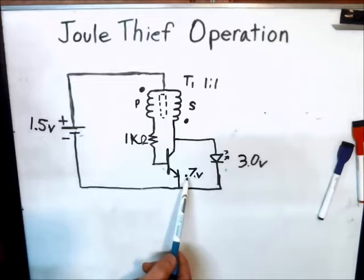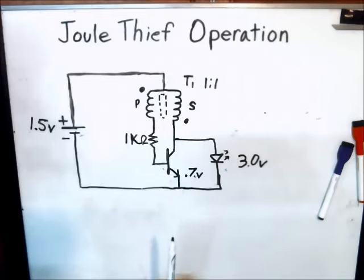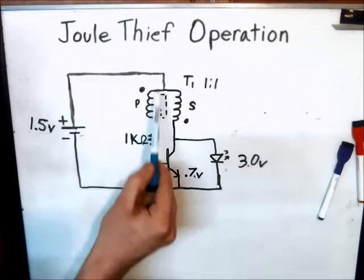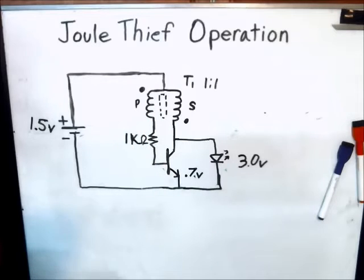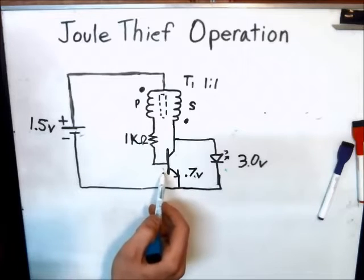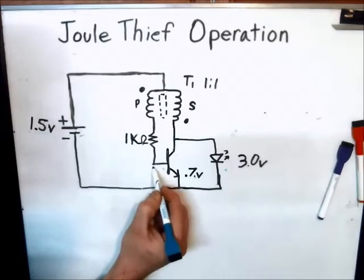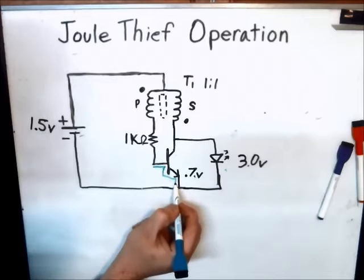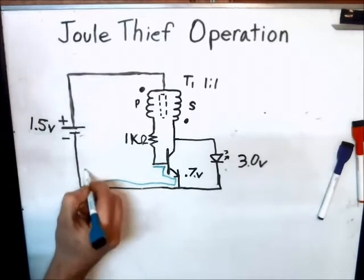I can climb over that 0.7 volt wall there because I'm 1.5 volts. So the first stage of this circuit would be going through the base here. Let's use blue for stage one. That would be the first path I would be able to take.